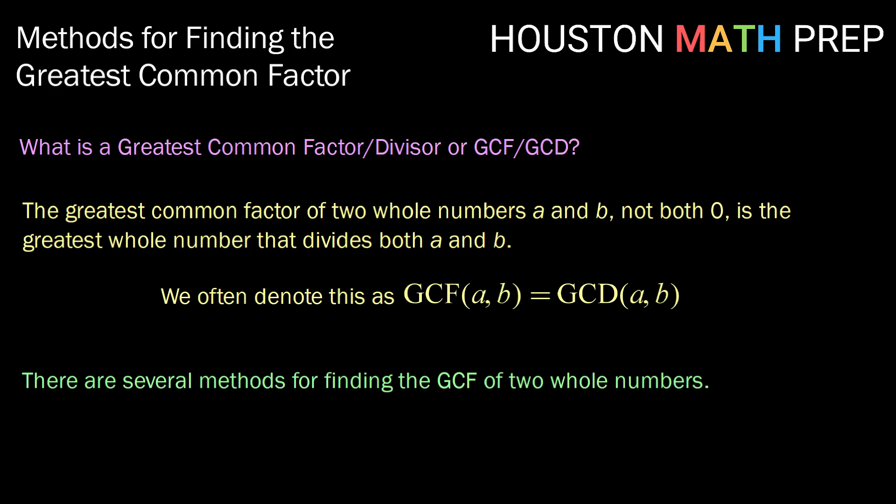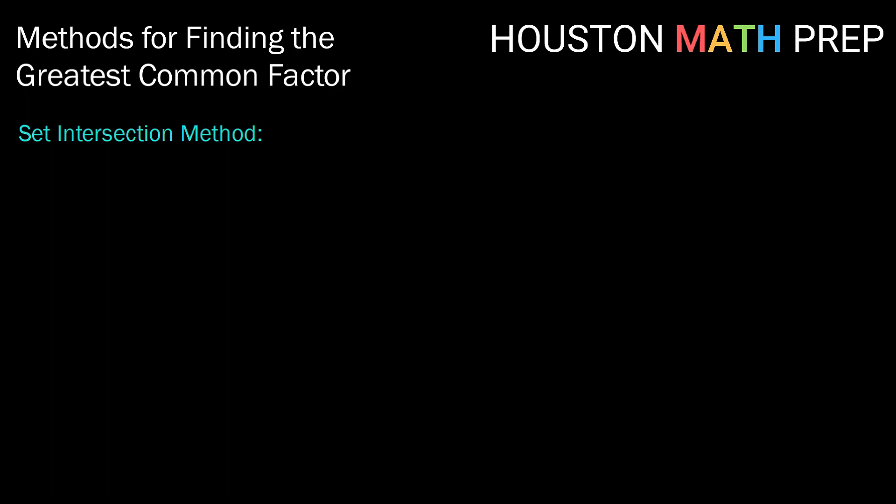There are several methods for finding the GCF of two or more whole numbers. So let's look at the first method. This is called the set intersection method. Here we define A to be the set of divisors of one number and B to be the set of divisors of another. In this case, let's think about A as the set of divisors of 8 and B as the set of divisors of 20.